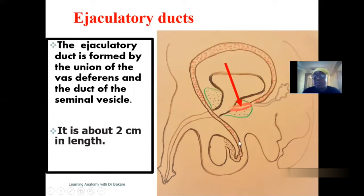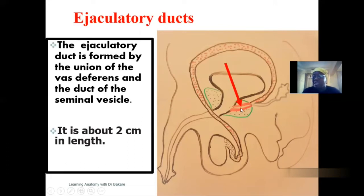Sperm coming from the vas deferens runs through these ducts. When they get to this region, the secretions from the seminal vesicle will also be emptied into it, and together they unite to form the ejaculatory duct before finally going down the tract through the prostatic urethra, then to the membranous urethra, and then to the penile or spongy urethra.